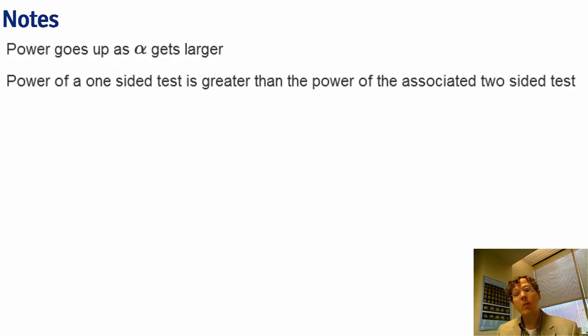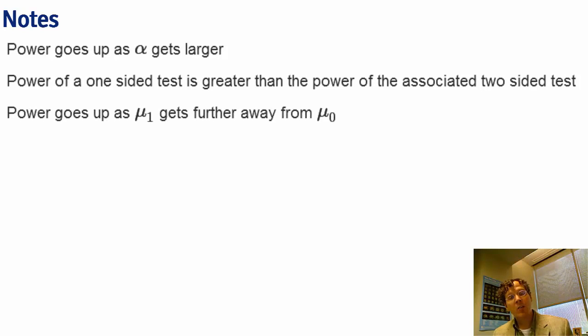So let's go through some basic rules about power. As alpha gets larger, our power gets larger. So the power of a one-sided test is greater than the power of the associated two-sided test, and we can see that by virtue of just dividing alpha by 2 in this bullet point above. The further mu a gets from mu naught, the higher the power is.